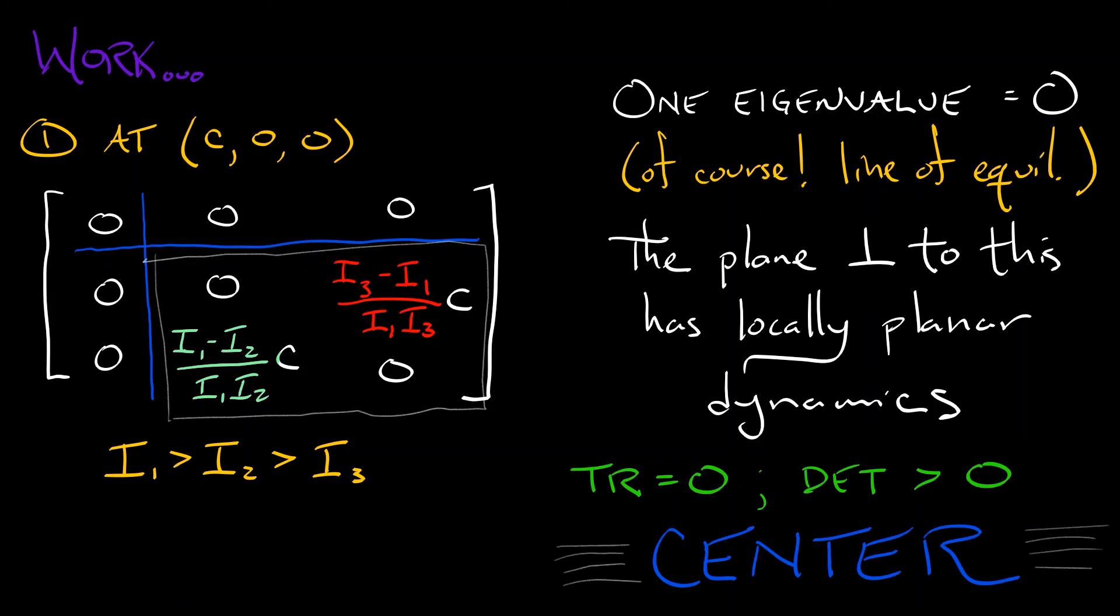Now, can we trust that? Oh yes, because these are conservative dynamics. No friction, no gravity. It really is going to be a center. Now with more work, we can show that at plus or minus c, zero, zero, we get centers. No problem.